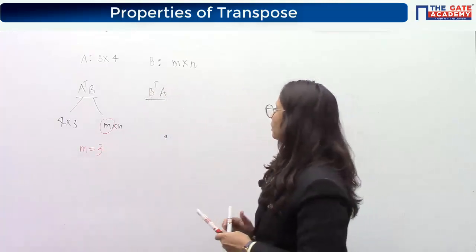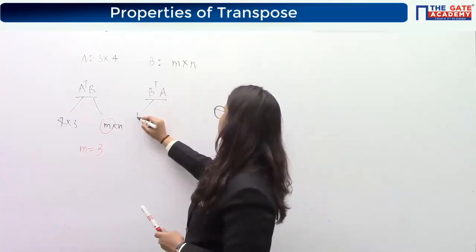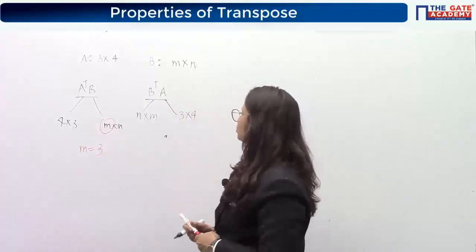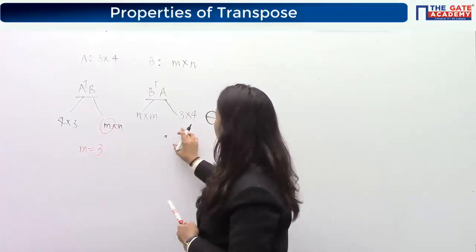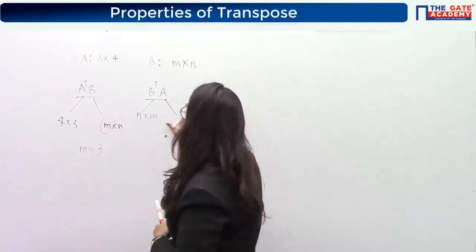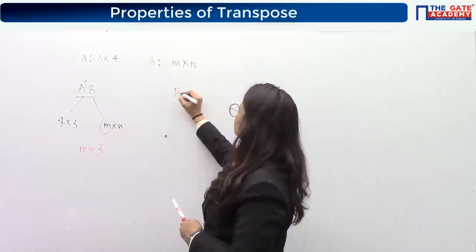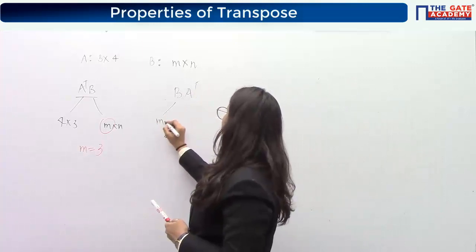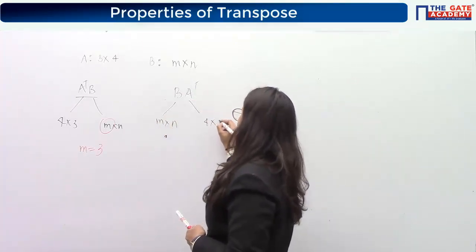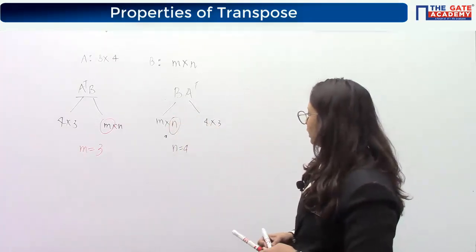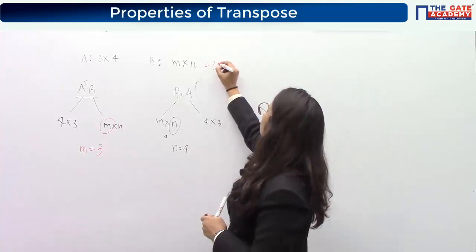Also, B times A transpose is defined. B transpose has order N×M and A has order 3×4. This product being defined gives us N equals 4. So the order of B is 3×4. Very easy question — everybody answered correctly.